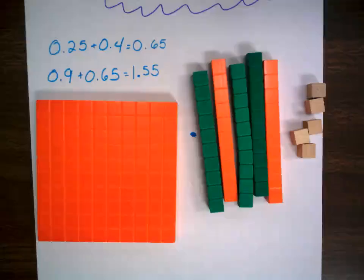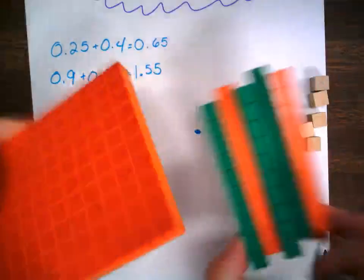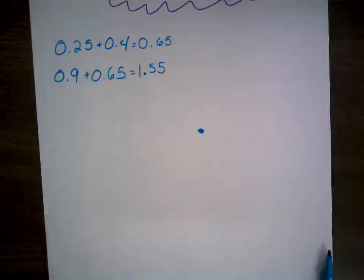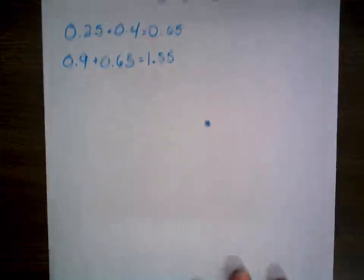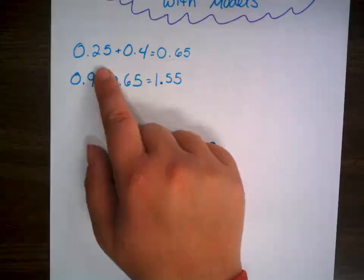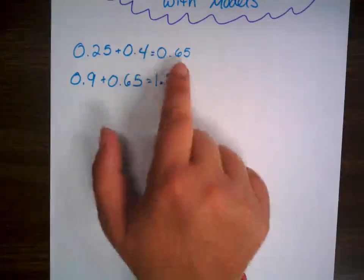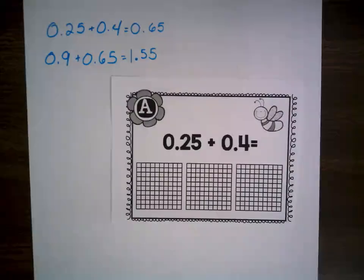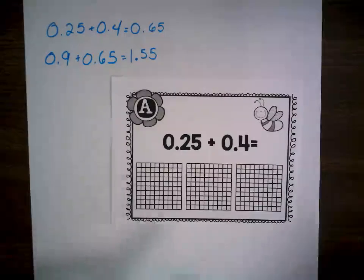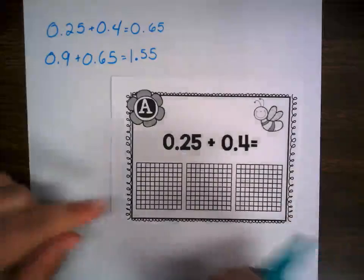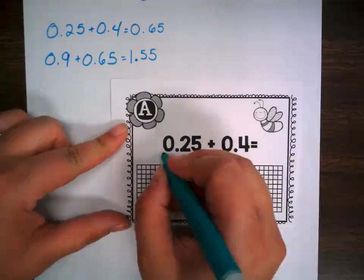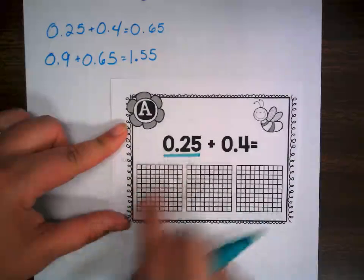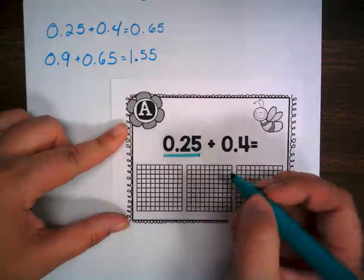So now how would this look when I'm not able to have my actual base ten blocks to play around with? Let's take a look. I know that 0.25 and 0.4 equals 0.65. But what if I just have a picture of base ten? Well, there's a special way I like to do that — I like to use fun colors. So I'm going to color code these.